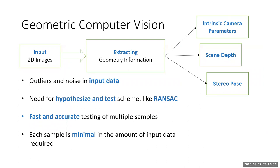Geometric computer vision takes as input a set of 2D images. These images have two types of data: the color at each pixel and the pixel position. For geometric information, we extract information from the pixel positions. This can include intrinsic camera parameters like focal length, radial distortion, or principal point; or more elaborate information like scene depth, stereo pose between two cameras, absolute pose, or homography — all of which require pixel measurements as input data.